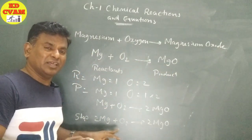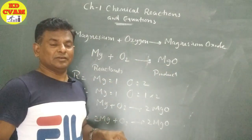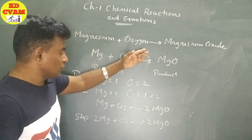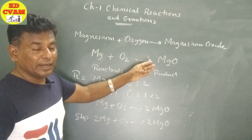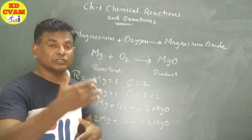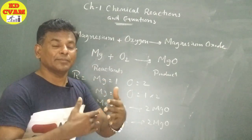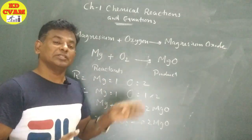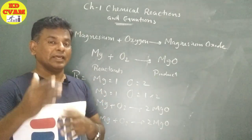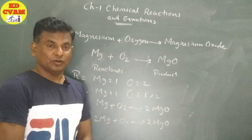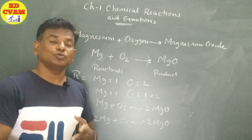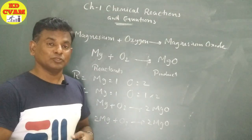This is the unbalanced equation, also called the skeletal chemical equation. And this is the balanced equation. This method is called the hit and trial method because we observe and try different coefficients. We have used trial method here, therefore this method is called hit and trial method for balancing chemical equations.